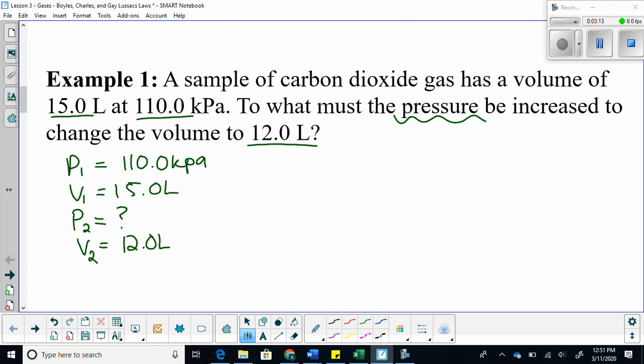From here, we're going to use the formula: P1 V1 is equal to P2 V2. We are isolating for P2. So I will divide both sides by V2. V2 cancels out here, and I am left with P2 is equal to P1 V1 over V2.